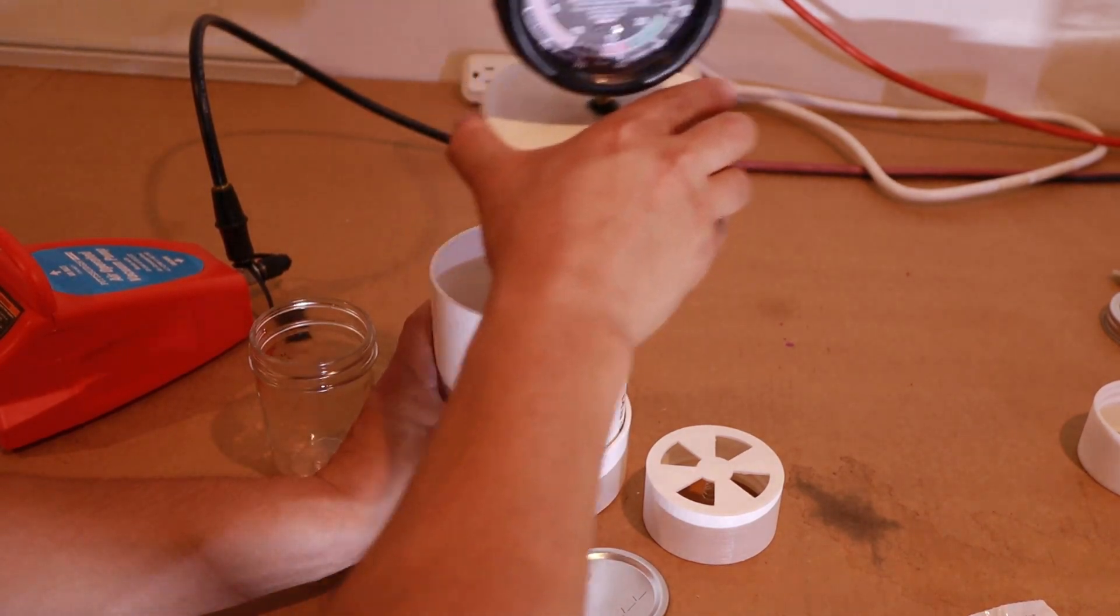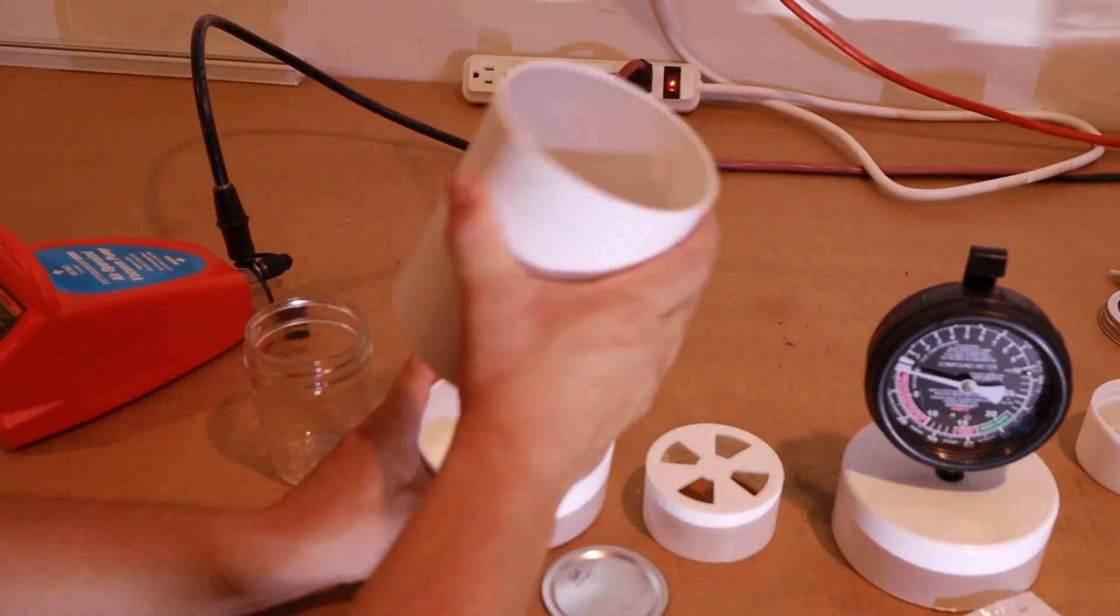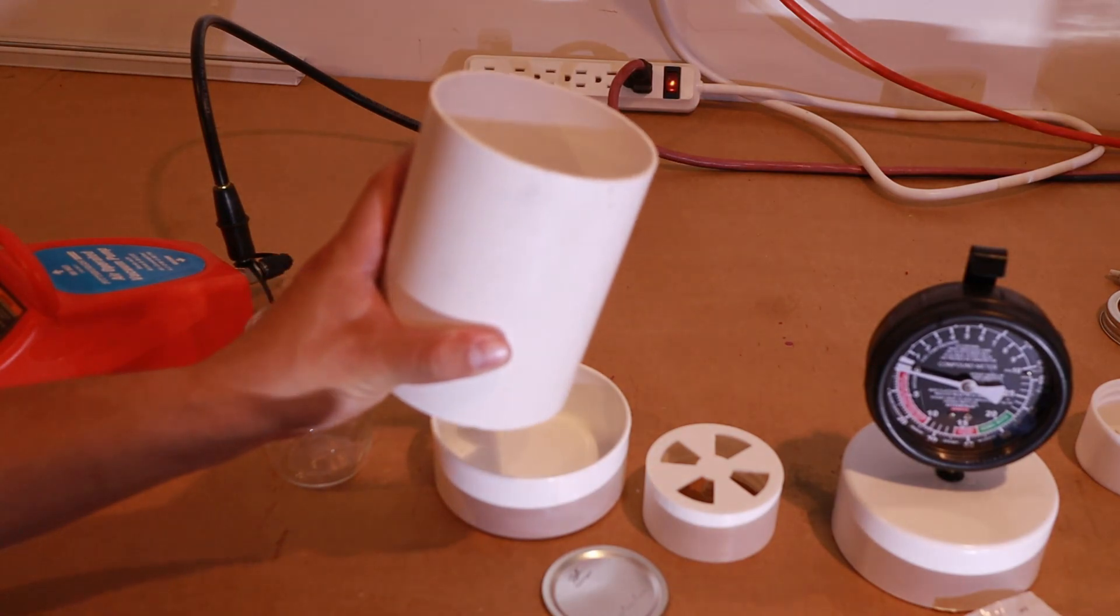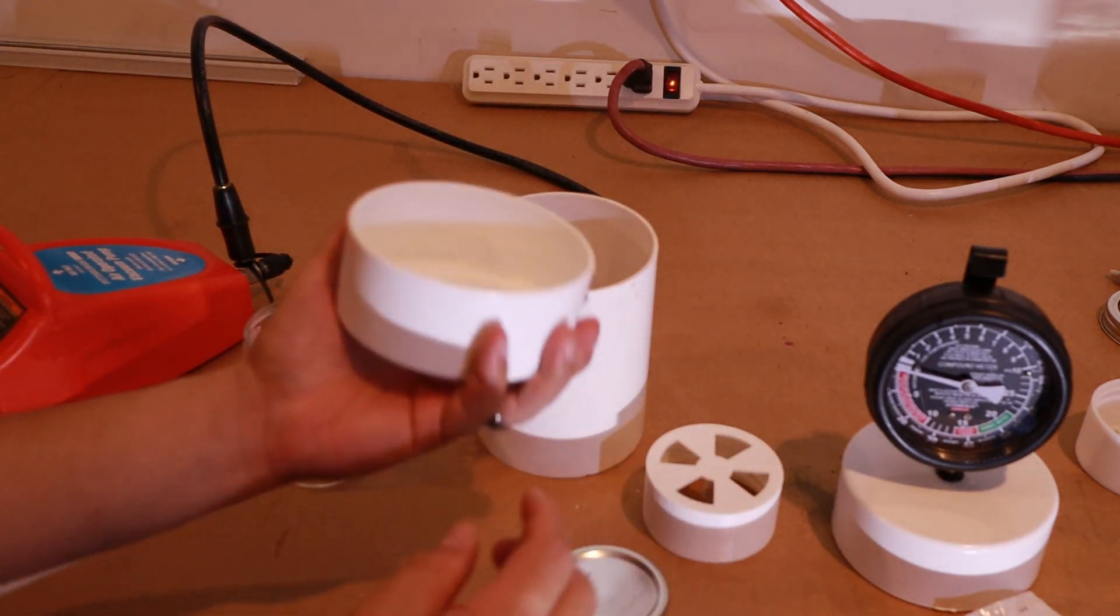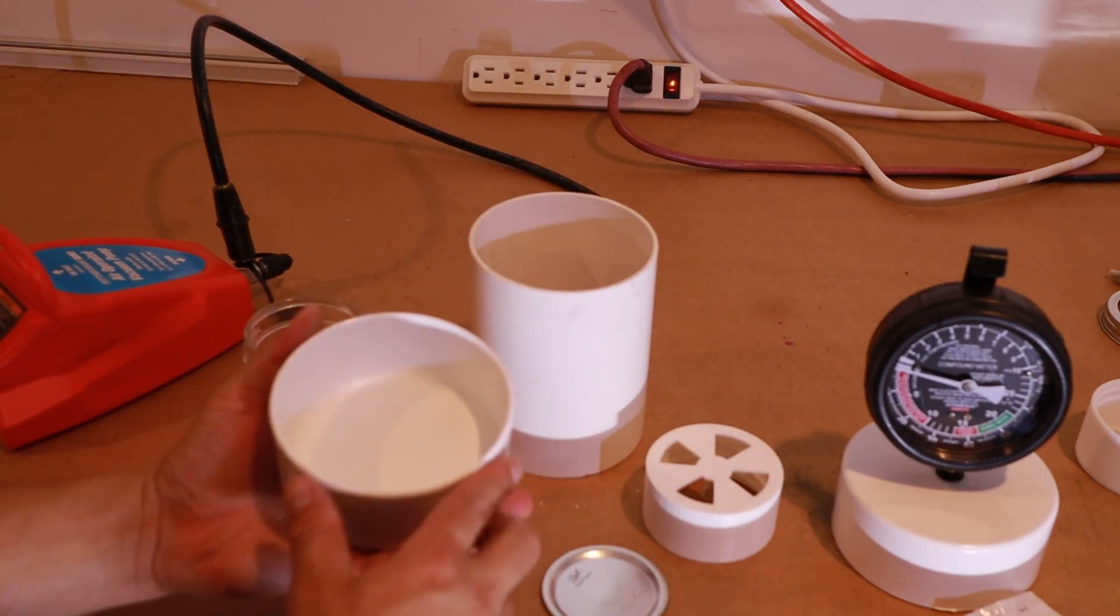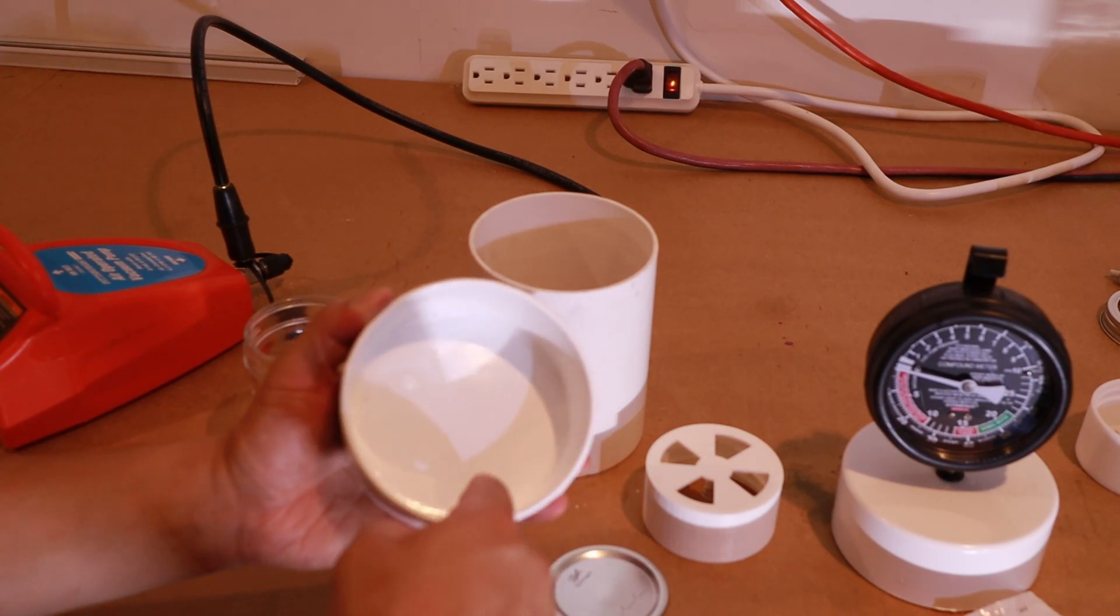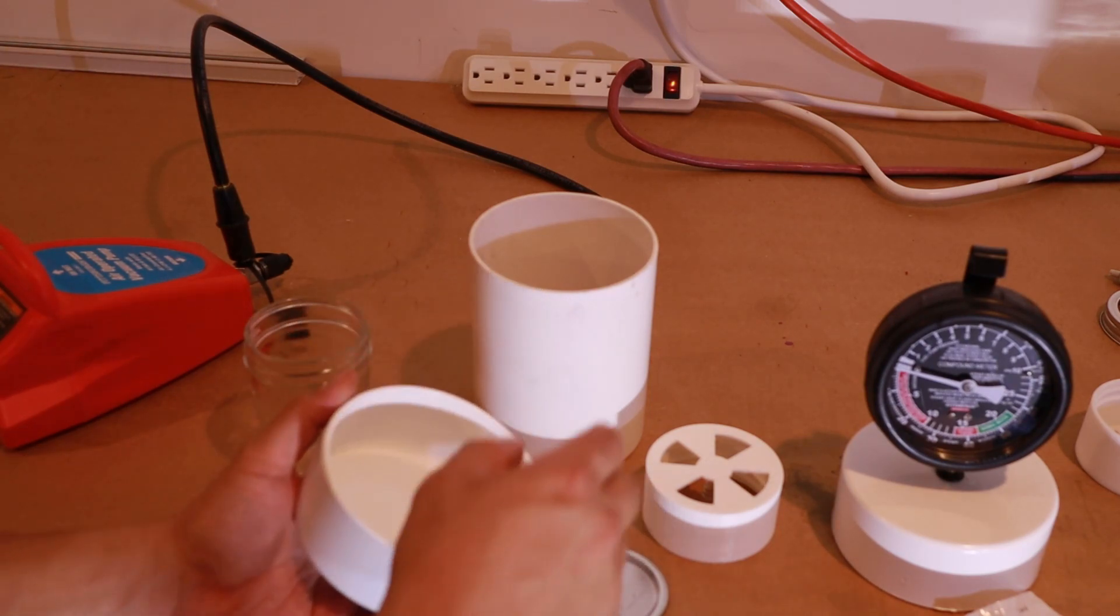Alright, to make your vacuum tube, take a four inch piece of PVC, two caps, coat the inside of the cap with silicone, then put some Vaseline around it to help seal it.